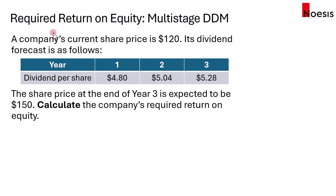Here we have a company whose current share price is $120. Its dividend forecast is as follows: in year 1, the dividend per share will be $4.80; in year 2, the dividend per share will be $5.04; and in year 3, it will be $5.28. We expect the share price at the end of year 3 to be $150.